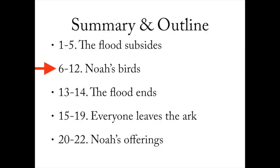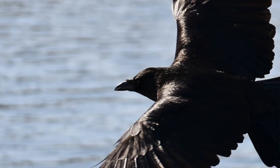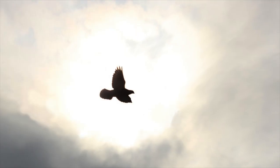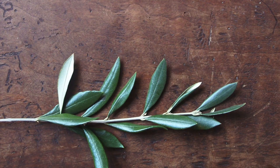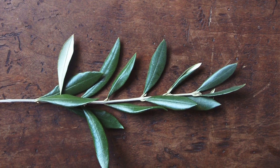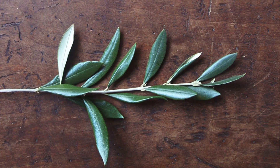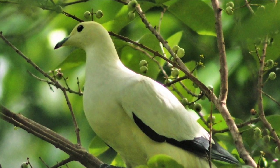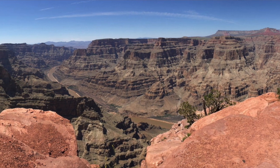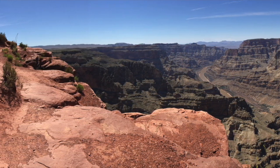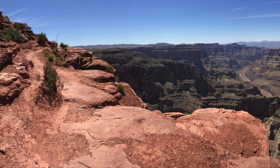In the next section, verses 6 to 12, we deal with Noah's birds. Forty days later, Noah opens the window and he lets out a raven, and the raven can't find a place to land. Then Noah lets out a dove, and the dove returns to the ark. Seven days later, Noah lets out a dove again, and this time the dove brings an olive branch, meaning that the vegetation and trees were beginning to grow. And then seven days later, the dove does not return. In verses 13 to 14, we are told that the flood ends, and the earth is completely dry on the 27th day of the second month of Noah's 601st year, which is approximately one solar year, or 365 days, from the beginning of the flood.